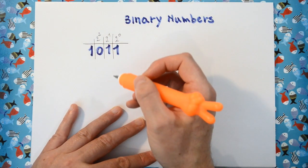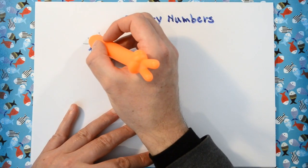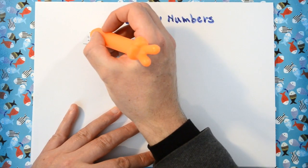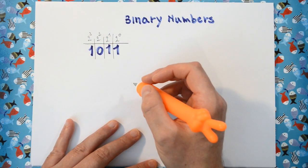And the fourth bit, as you might have guessed, tells us how many times 2 to the power 3 there are.